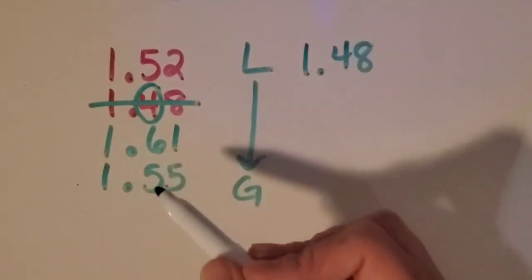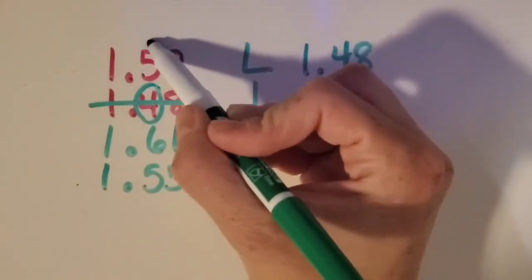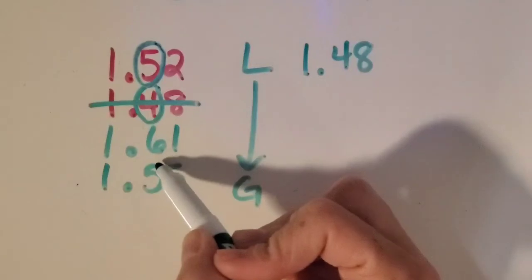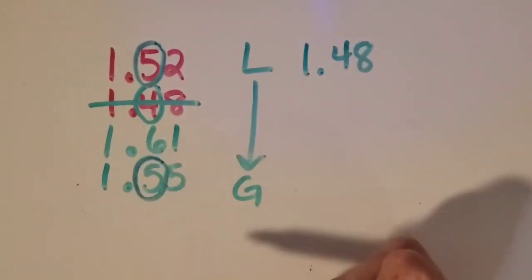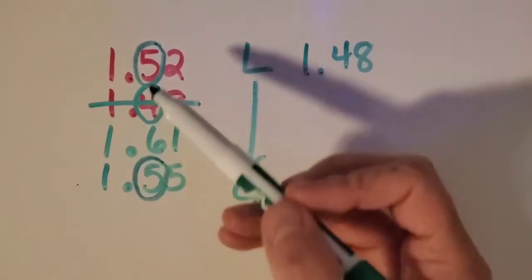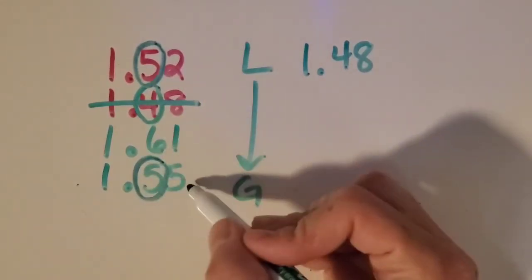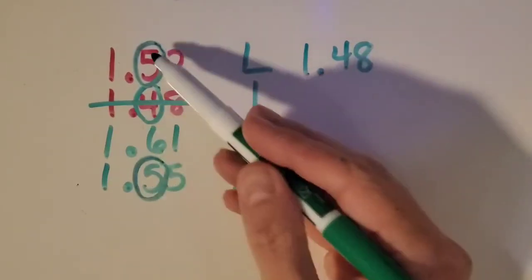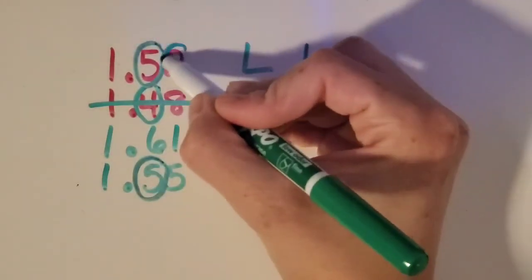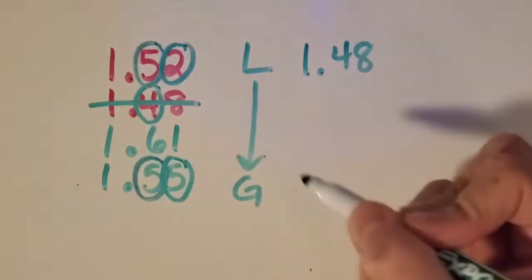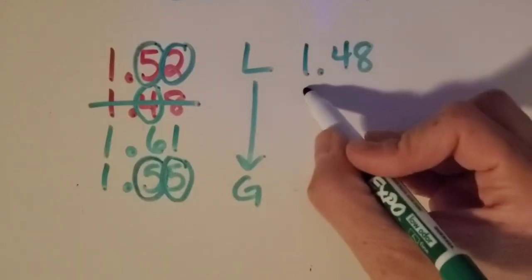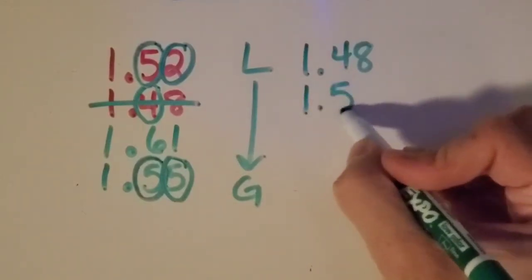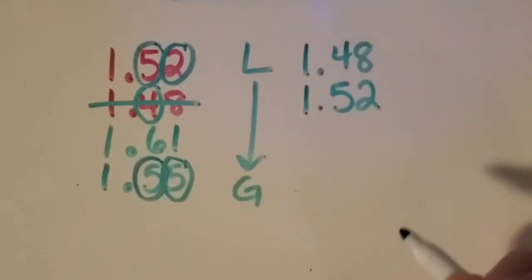Okay, next I'm noticing that I've got 5 tenths and 5 tenths. Those are the same. That 6 tenths looks bigger, so I'm going to wait on that one. And then I'm going to move on over to the hundredths place. Since the tenths are the same here, I've got to compare the 2 hundredths and the 5 hundredths. What is smaller? Good job, you got it. So I'm going to put that one next, cross it out.